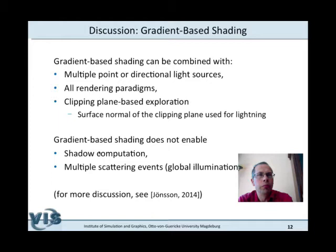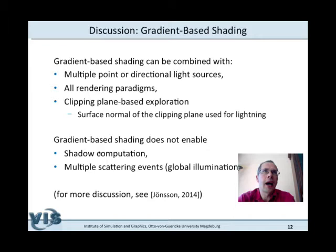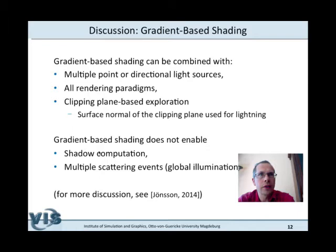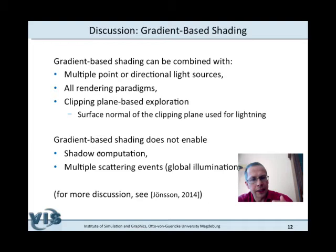Gradient-based shading can be combined with more advanced techniques using multiple light sources. In computer graphics, very good effects can be achieved by combining oblique light from the front with light from the sides or even a small light from the back, which can considerably improve spatial perception. Gradient-based shading can be combined with all rendering paradigms — ray casting, object-based splatting, and texture-based methods. It also works with clipping plane interactions such as slab rendering.